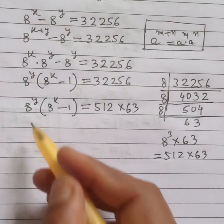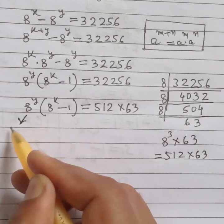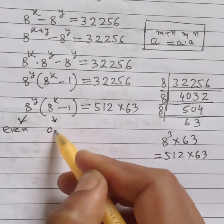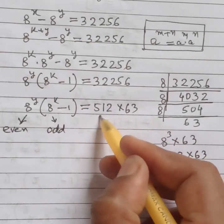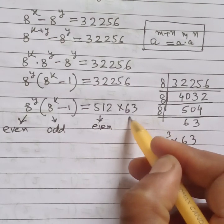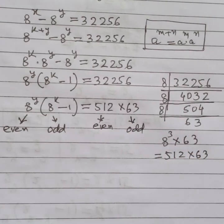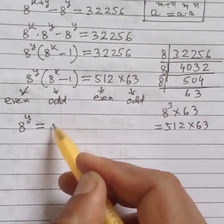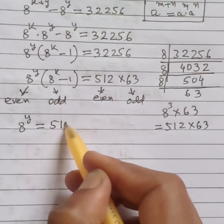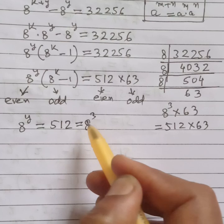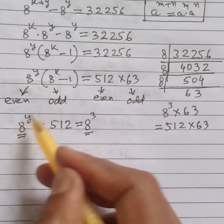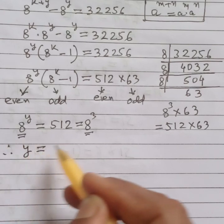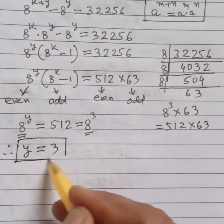Now, 8 to the power y is an even number and 8 to the power k minus 1 is an odd number. On the right-hand side, 512 is even and 63 is odd. By matching even to even, we get 8 to the power y equals 512, which equals 8 cubed. Since both sides have the same base, we equate the exponents: y equals 3.